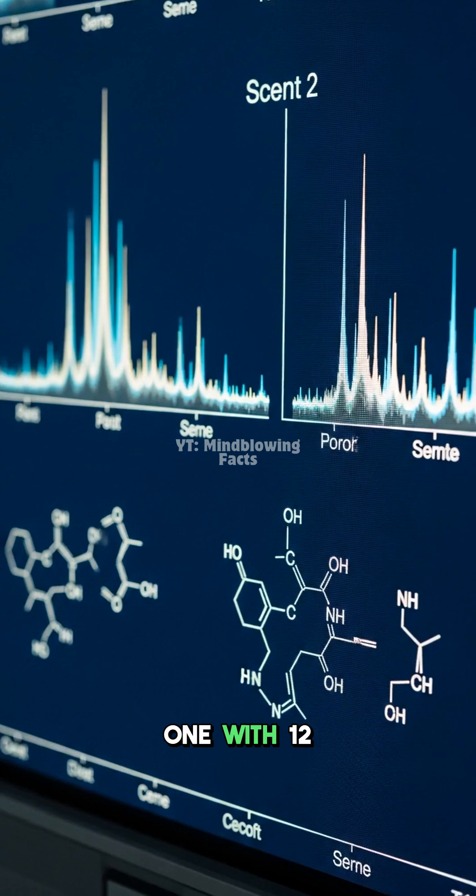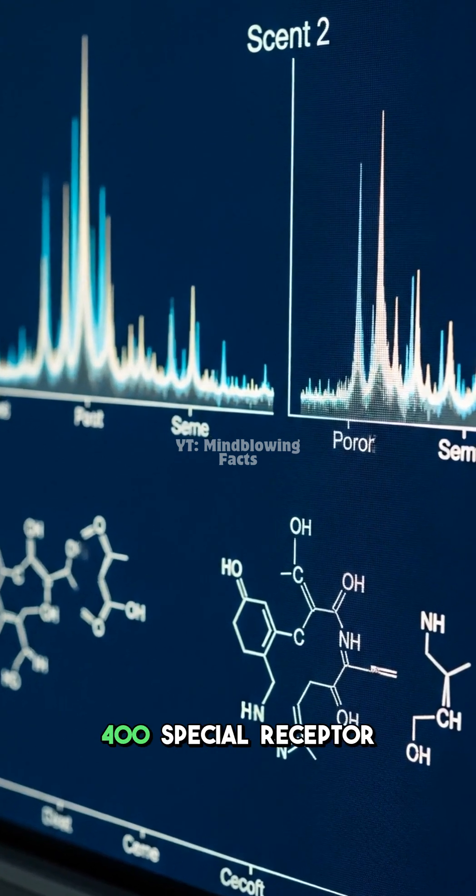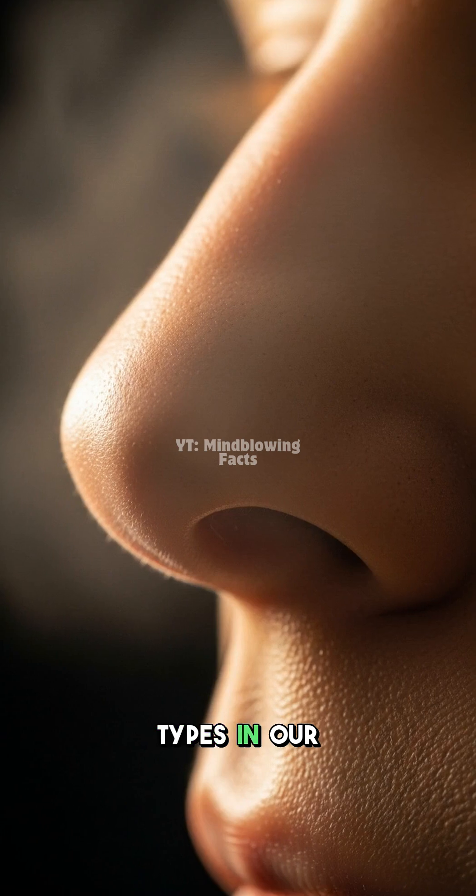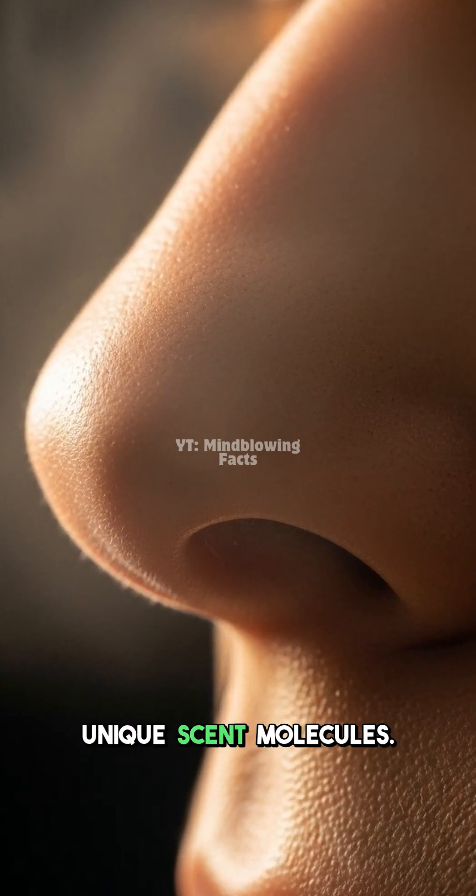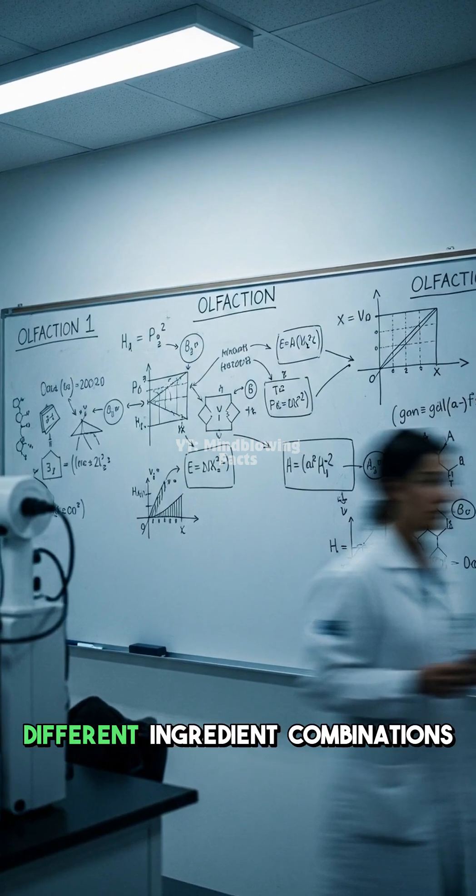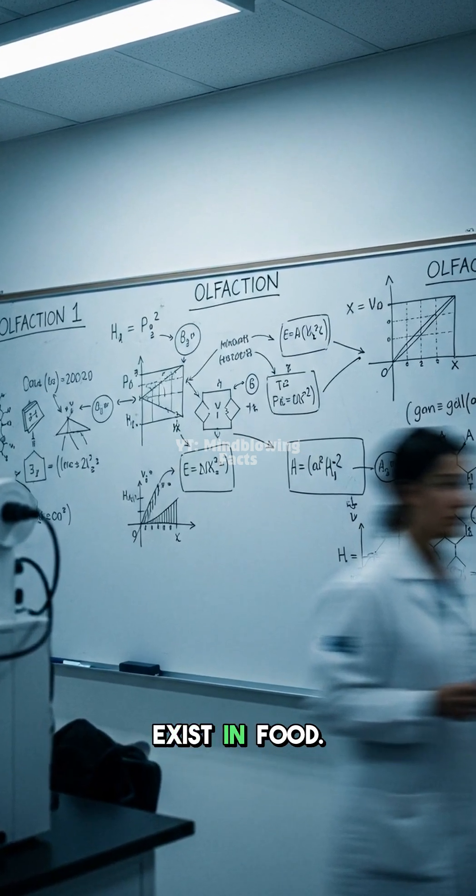That is a 1 with 12 zeros. We have about 400 special receptor types in our nose. These receptors combine like codes for unique scent molecules. Imagine how many different ingredient combinations exist in food.